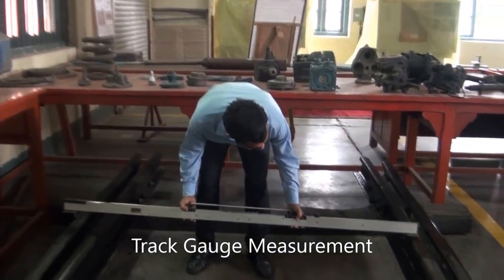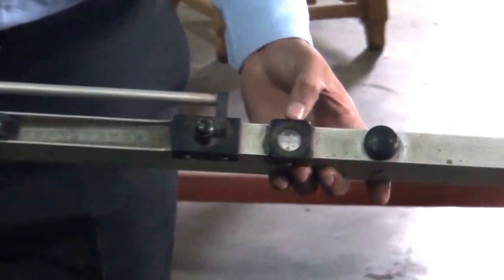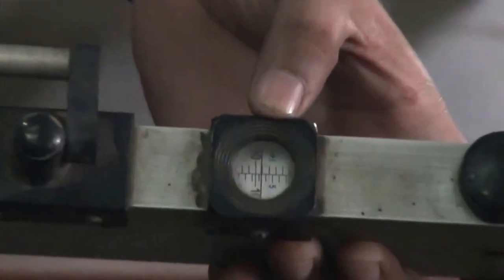To measure the track gauge, push the movable end of the instrument against the interface of one rail, then gently insert the fixed end, rotate the knob to lock the reading, and finally note down the reading on the gauge.